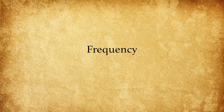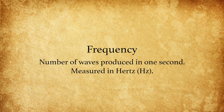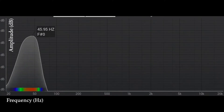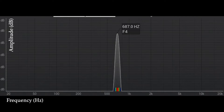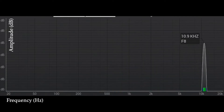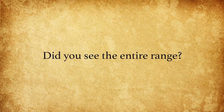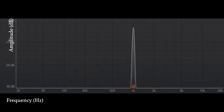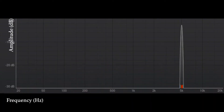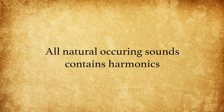How are these waves measured? They are measured by frequency. What is a frequency? It is the number of waves produced in one second, as measured in Hertz. Let's see the entire range of frequency measured in Hertz. Now we have already understood that when any sound is produced, it contains harmonics.